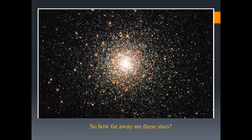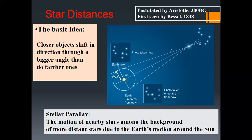How far away are these stars? When you're looking at the sky, it looks like the stars are all at roughly the same distance from us — as if on a fabric around us. But these stars are actually lying at very different distances. The basic idea is that closer objects appear to shift in direction through a bigger angle than more distant stars do. We call this stellar parallax.